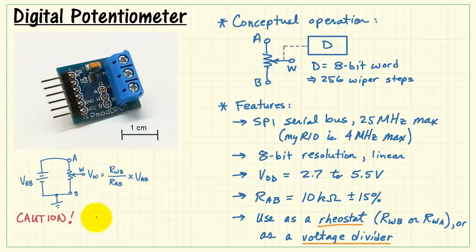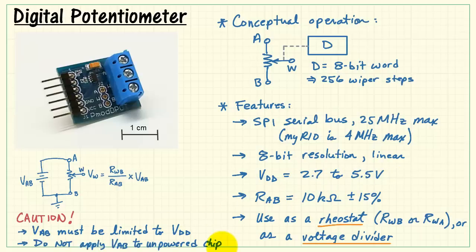I'll point out two cautions when using the device as a voltage divider. First and foremost, this voltage VAB must be limited to whatever you are using for your supply voltage. Whatever value you choose, you cannot exceed that value. Also, make sure that you do not apply a voltage when the chip is unpowered. This is also important. You run the risk of damaging the potentiometer otherwise.